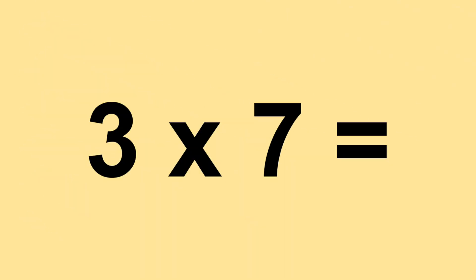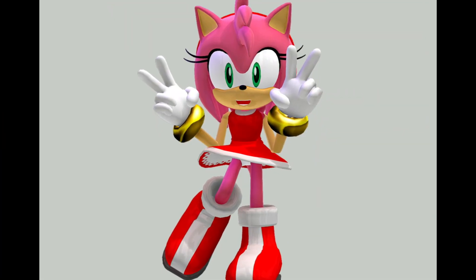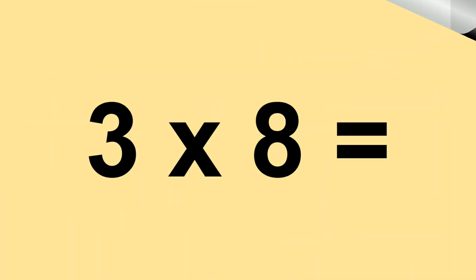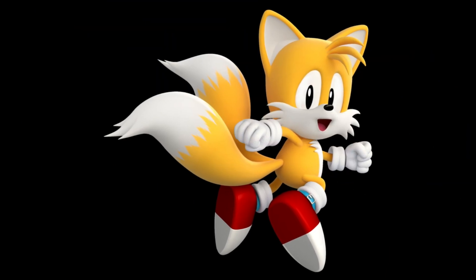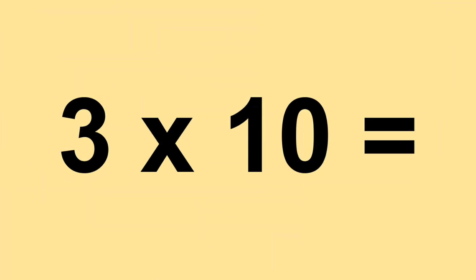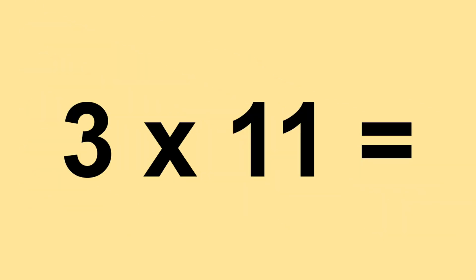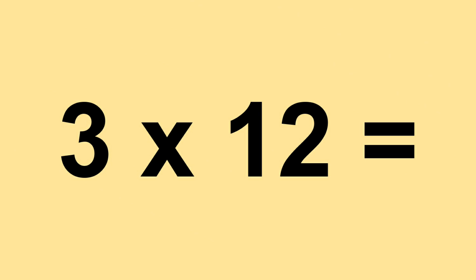Three times six equals eighteen. Three times seven equals twenty-one. Three times eight equals twenty-four. Three times nine equals twenty-seven. Three times ten equals thirty. Three times eleven equals thirty-three. Three times twelve equals thirty-six.